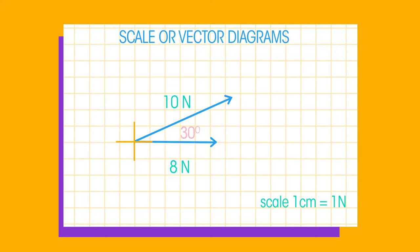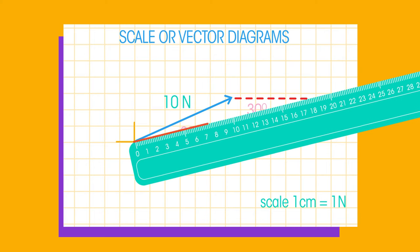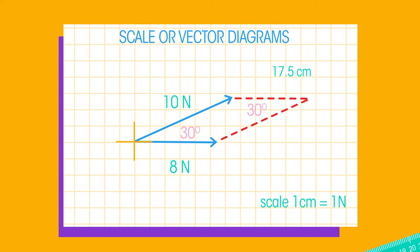Step 3. Connect the lines by drawing a parallelogram. Step 4. Measure the line from the start to the opposite corner. Use your scale to work out the magnitude of the force. For example, 17 cm equals a resultant force of 17 newtons.